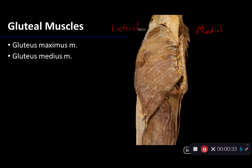You can probably recognize the outline of the gluteus maximus muscle here. The gluteus maximus muscle takes its proximal attachments from the posterior aspect of the iliac crest as well as the dorsal aspect of the sacrum. Its distal attachments are to the gluteal tuberosity of the femur as well as the iliotibial band, which you can see part of right here.